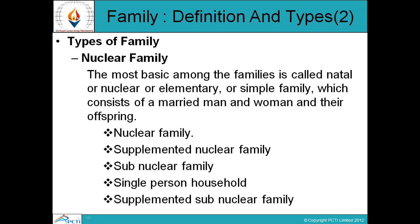Types of Family: On the basis of composition of the family, three distinct types of family organization emerge. The first is the Nuclear Family. The most basic among families is called Natal or Nuclear, Elementary or Simple Family, which consists of a married man and woman and their offspring. In specific cases, sometimes one or more additional persons are found to reside with them. Over a period of time, the structure of a family changes. Additional members such as aged parents or unmarried brothers or sisters may come to live with members of a nuclear family.